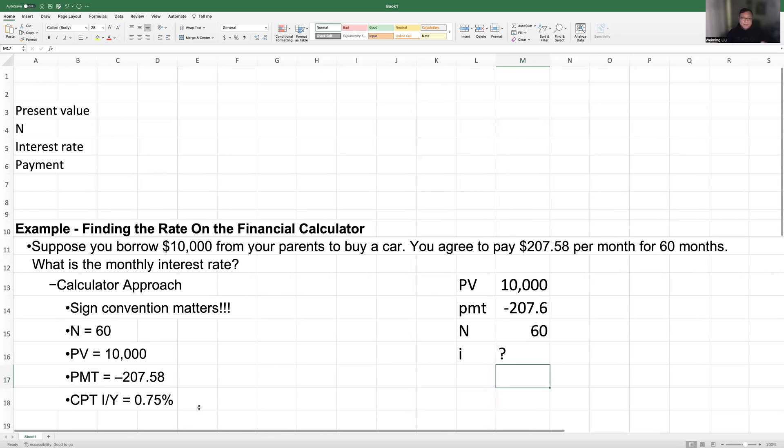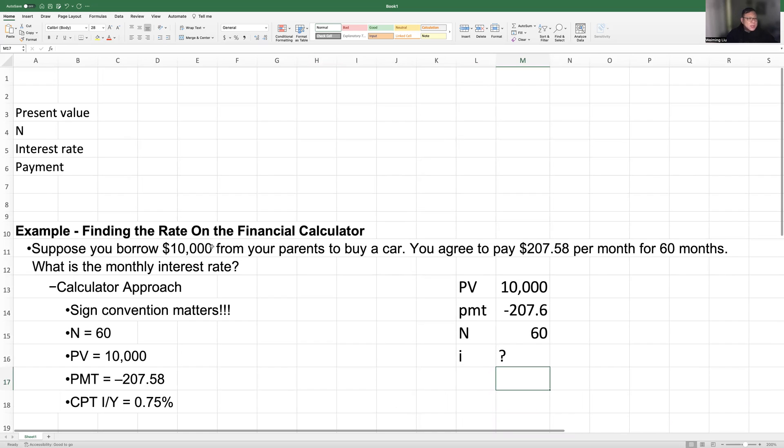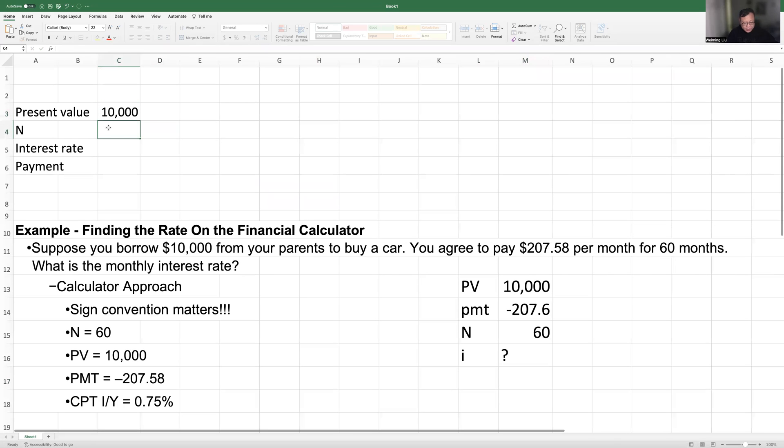So this is one way, but I'm going to show you a different way to do this. In Excel, they have a lot of built-in financial calculation formulas. So we can use that. So in this question, let's use Excel to work on this. Like we mentioned, the present value is $10,000. N is 60.